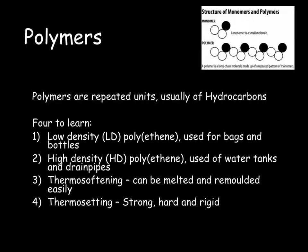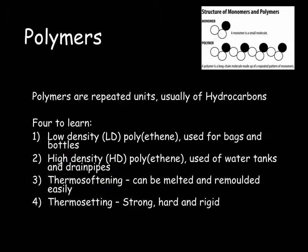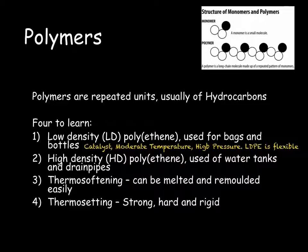There are four types of polymers that you need to be able to talk about. The first two — low-density and high-density — depend on the catalyst that was used to make our polythene, which affects the reaction conditions, so the temperature and pressure. The first is low-density polyethene (LDPE). This is used for bags and bottles because it is very flexible. It is made under a moderate temperature and high pressure with a catalyst.